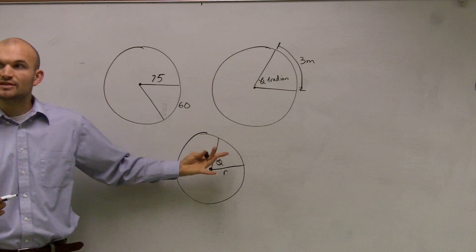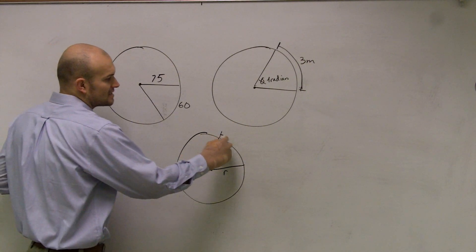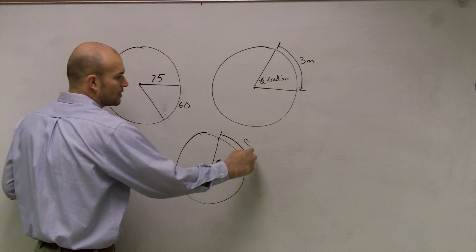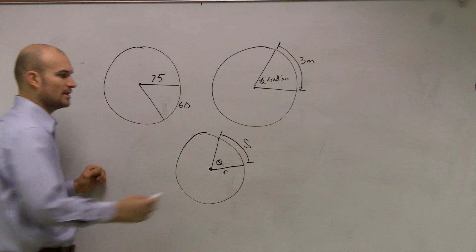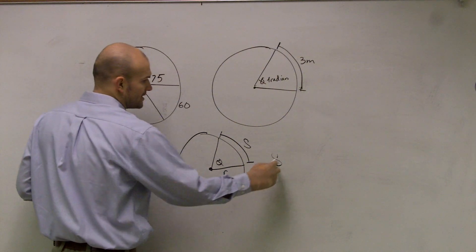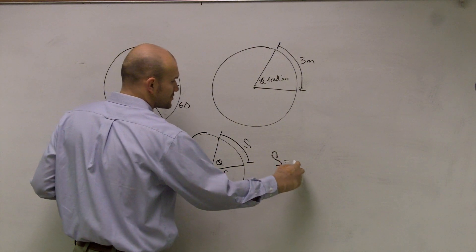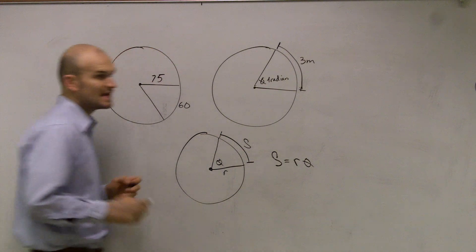Then what we can do is develop a formula to find the arc length, which we'll call s. The relationship of the formula is arc length s equals your radius times theta.